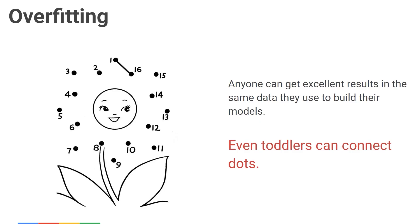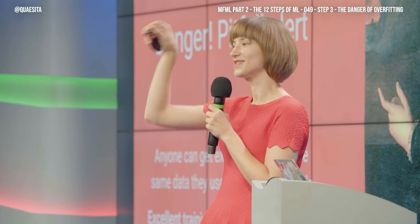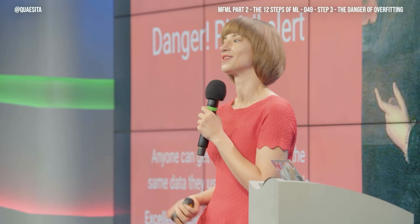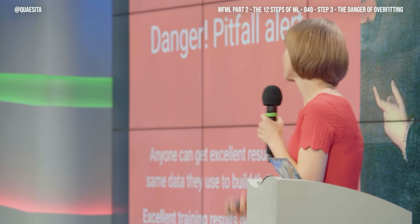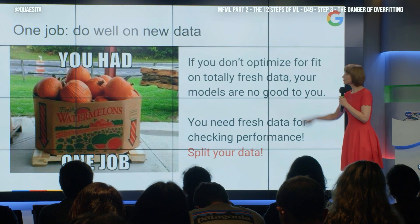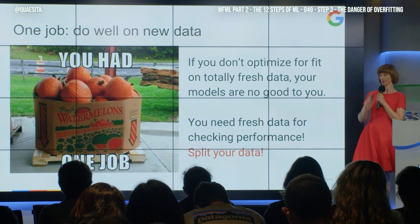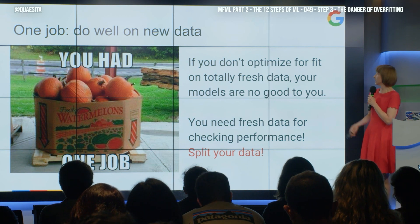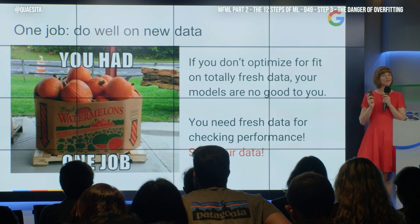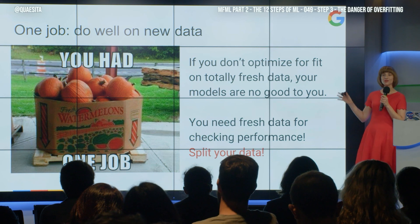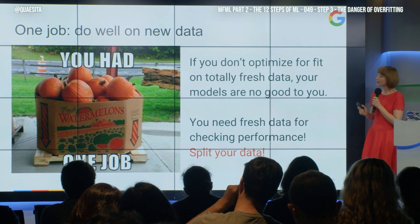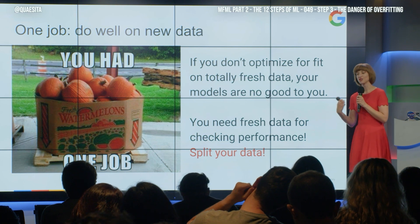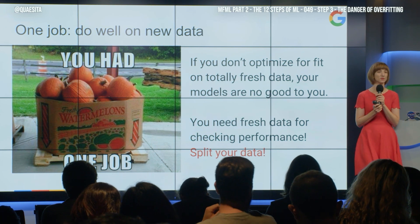Even toddlers can play that dot-to-dot connecting game. You can always connect your dots — and you can even connect your dots without realizing it by using a complex system like neural networks. So you have one job: optimizing for fit on fresh data. If you don't do that, you may as well not have a machine learning system. For that reason, you need fresh data for checking performance. That is why you split your data.